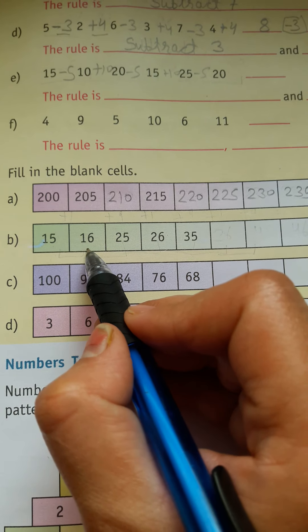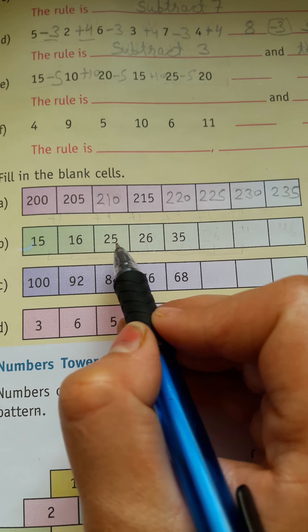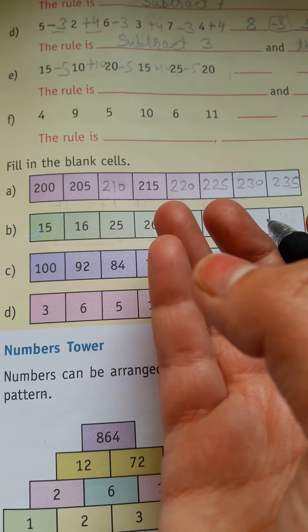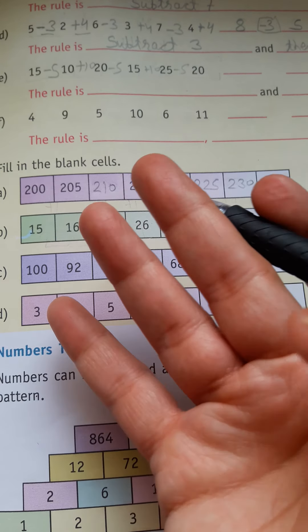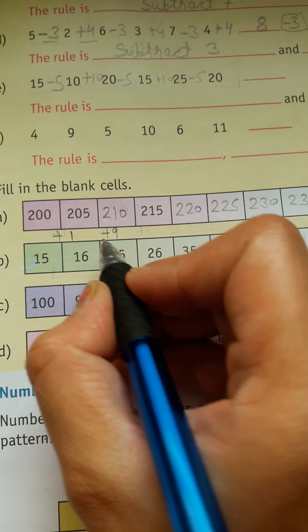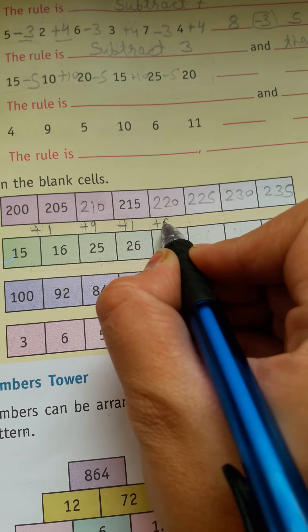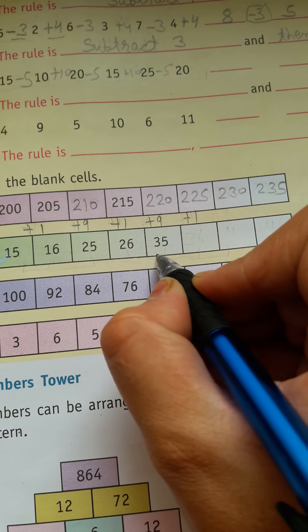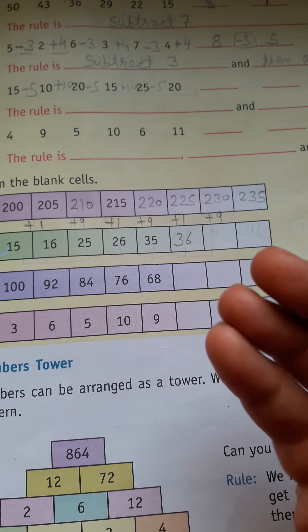In part B we see 15, 16 - add 1 happened. After 16, 25 came. 17, 18, 19, 20, 21, 22, 23, 24, 25 - add 9 happened. Here it was add 1, now ahead add 1 happened, then add 9. Now what will you do? Add 1.